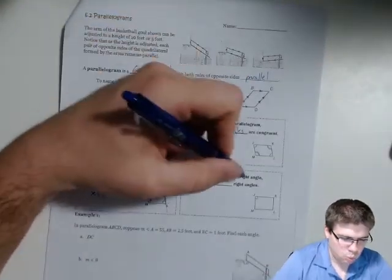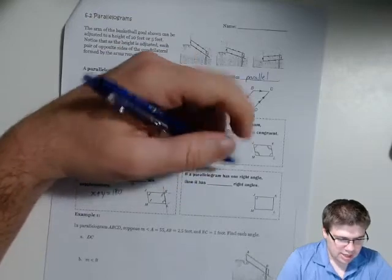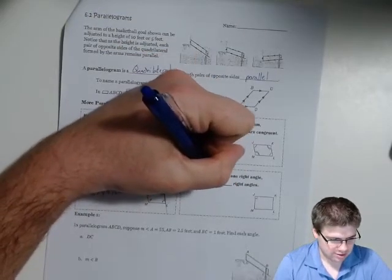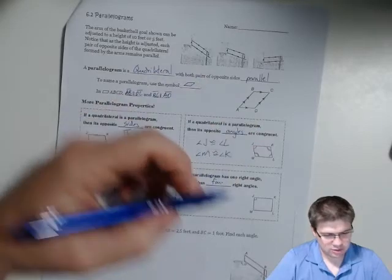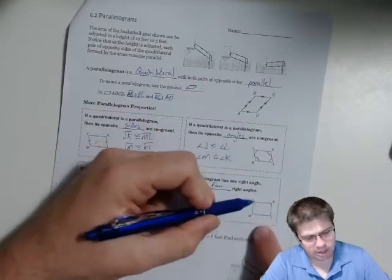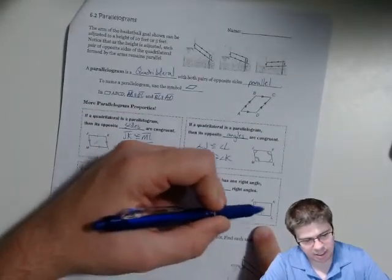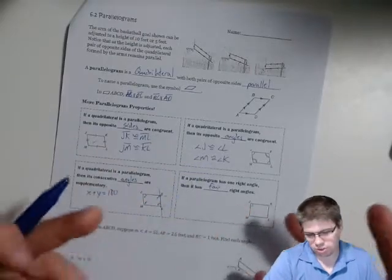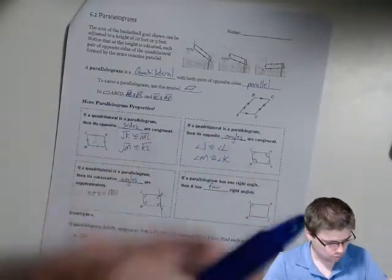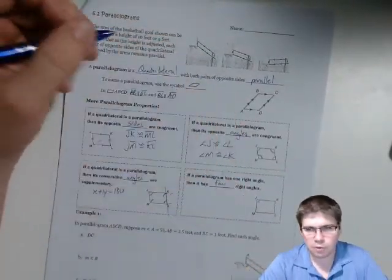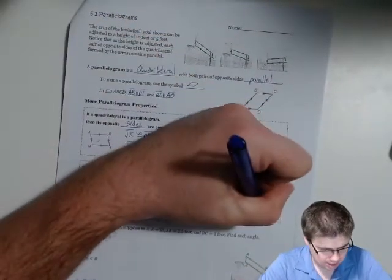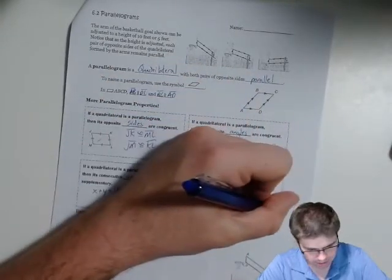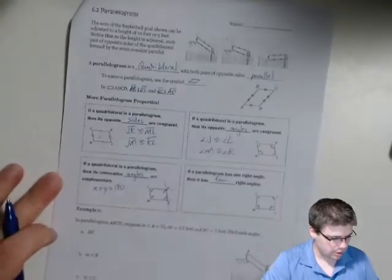If a parallelogram has one right angle, then it has four right angles. They're all going to be right angles because if they're supplementary, this has to be 90 to add up to 180. In fact, it gets a new classification and turns into a rectangle. All four angles end up having to be right angles.